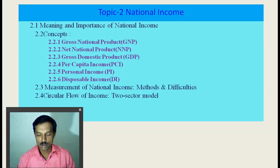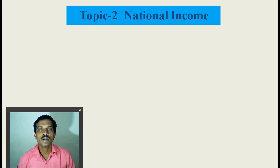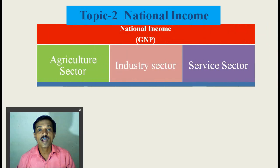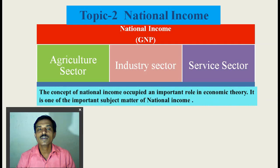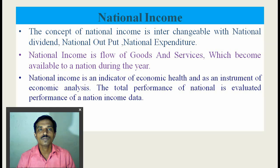In this topic, we will discuss these points. National income, in general, is the sum of production from three sectors: agriculture sector production, industrial sector production, and the services sector production. All three sectors' production summed within the year is called national income. The concept of national income occupies an important role in economic theory. It is one of the important subject matters of macroeconomics. The concept of national income is interchangeable with national dividend, national output, and national expenditure.